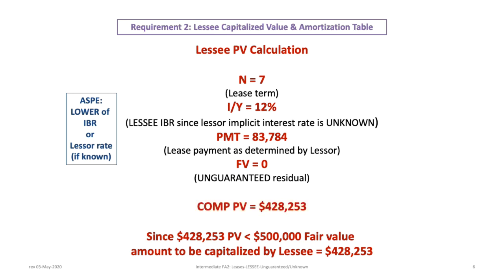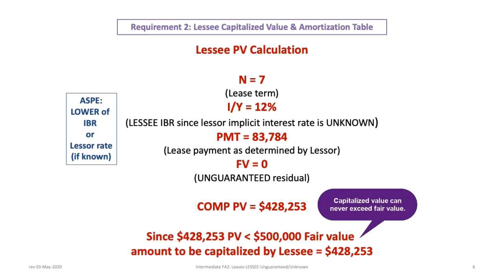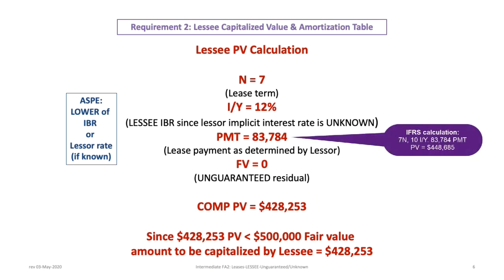Once the present value of minimum lease payments is calculated, we compare it to the $500,000 fair value and capitalize the lesser of the two. Since $428,253 is less than $500,000, the amount capitalized by the lessee is $428,253. If the present value had exceeded the fair value, we would capitalize $500,000 instead. In an IFRS scenario, the variables would be 7N, 10IY, $83,784 PMT, and 0FV, yielding a present value of $448,685, and all subsequent numbers would change accordingly.